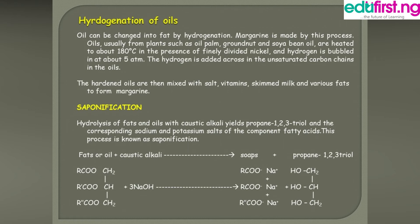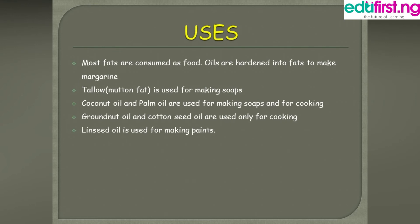Most fats are consumed as food, and oils are added into fats to make margarine. Tallow, which is mutton fat obtained from sheep, is used for making soaps. Coconut oil and palm oil are used for making soaps and for cooking, while groundnut oil and cottonseed oil are only used for cooking. Linseed oil is used for making paint.